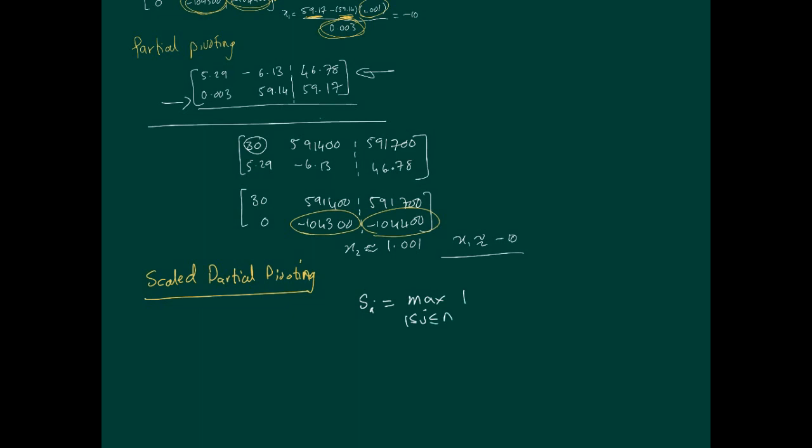The scaling factor looks along each row for the absolute largest value. If I apply it here: 30 and 59,140 - clearly 59,140 is the largest possible value, so s1 would be 59,140. Similarly, s2, the absolute largest value in the second row, is 6.13.